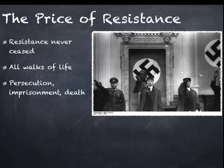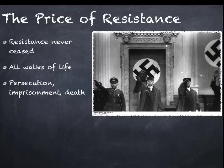Later in the Nazi regime, somebody was executed for telling a joke. Hitler and Goebbels are on a balcony — this is later in the war when things weren't going well. Hitler turns to Goebbels and says, 'What would cheer people up in Berlin?' And Goebbels says, 'Why don't you jump?' The person who told that joke was executed.